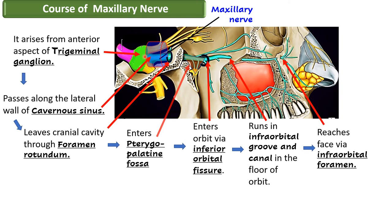Briefly, the course of the maxillary nerve: it takes origin from the anterior aspect of the trigeminal ganglion, runs in the lateral wall of the cavernous sinus, leaves the cranial cavity by passing through the foramen rotundum, runs near the roof of the pterygopalatine fossa, and leaves the pterygopalatine fossa by passing through the inferior orbital fissure. Now called the infraorbital nerve, it runs in the infraorbital groove, then the infraorbital canal, and finally passes through the infraorbital foramen to reach the face.